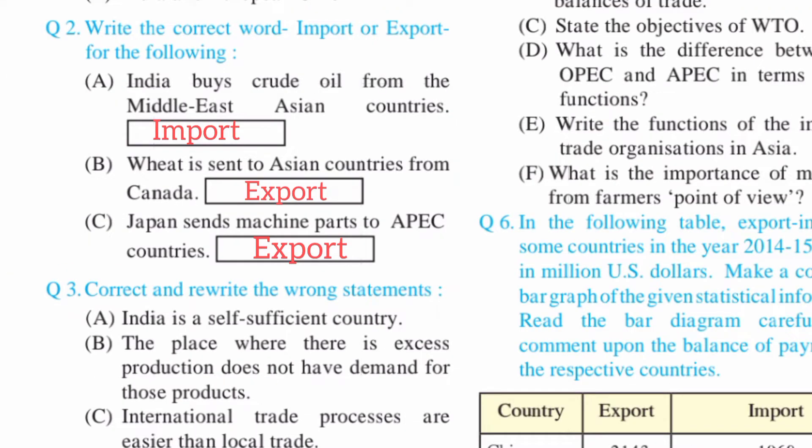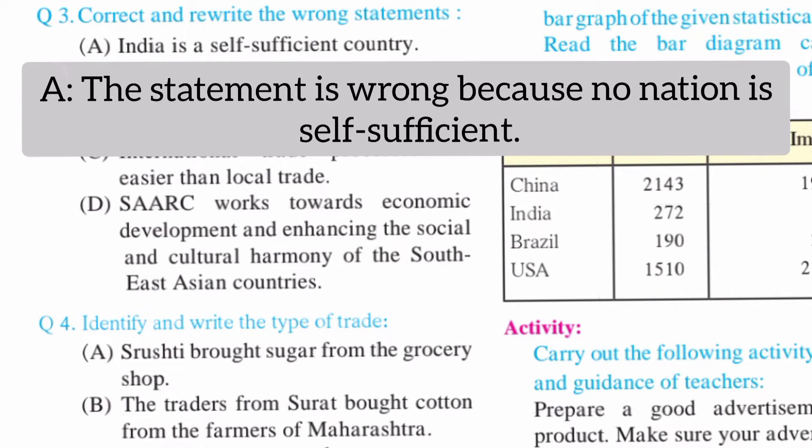Question number two: Write the correct word — import or export — for the following. A) India buys crude oil from Middle Eastern countries — answer: import. B) Wheat is sent to Asian countries from Canada — answer: export. C) Japan sends machine parts to APEC countries — answer: export.